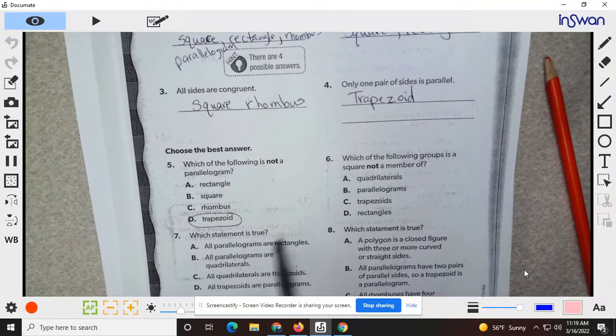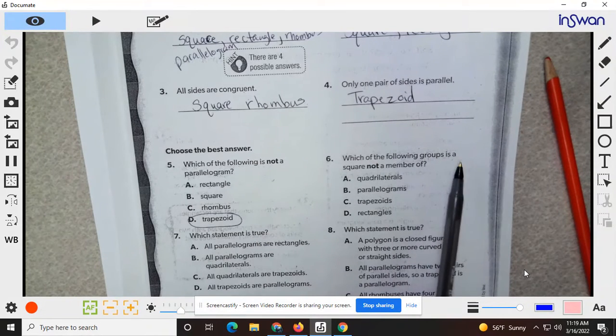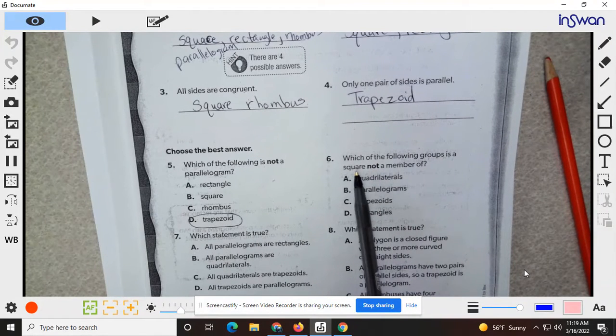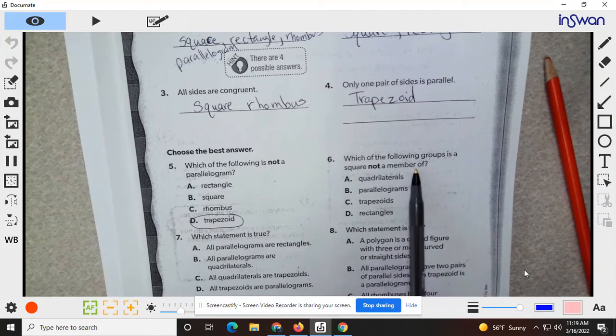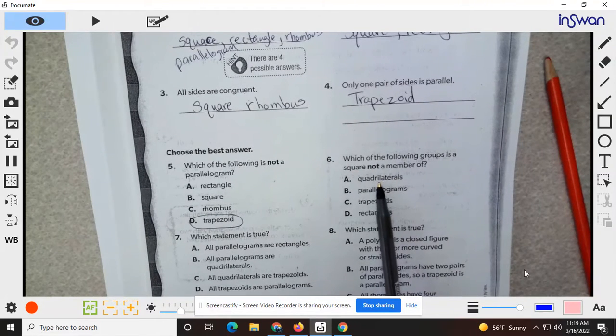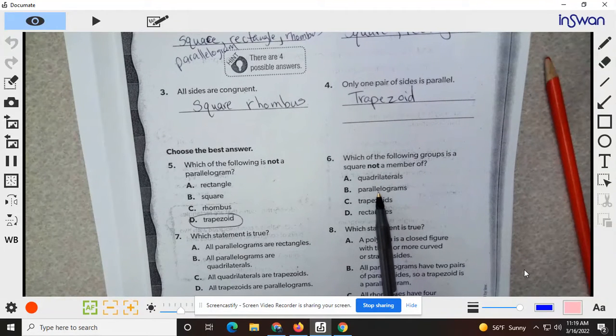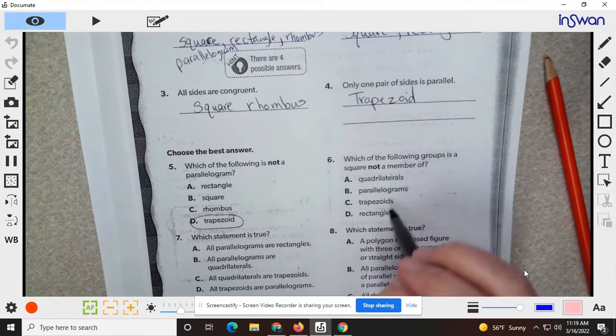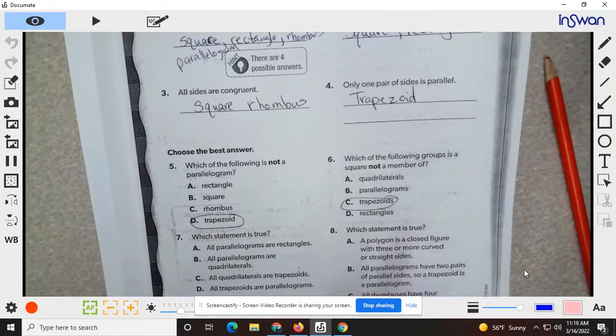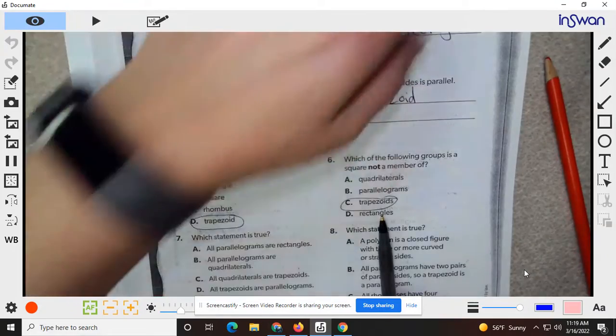Which statement is six. Which of the following group is not a member of? Which is a square not a member of? So a square does have four sides. A square has opposite sides parallel. A square does not have only one set parallel sides. And a square does have four right angles.